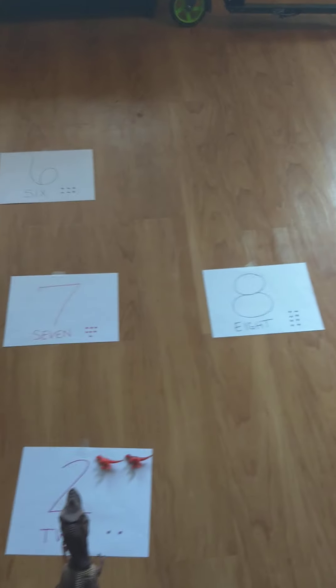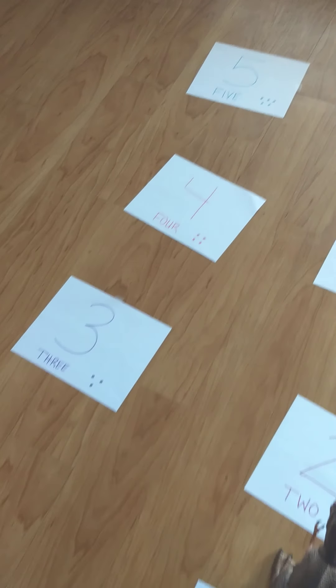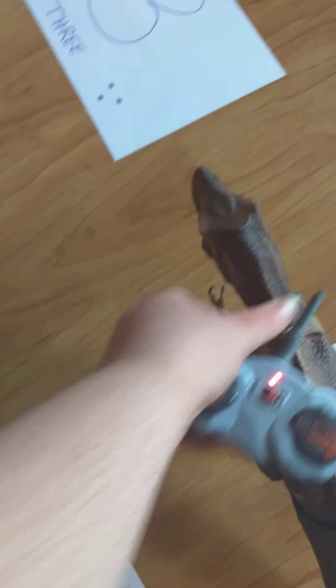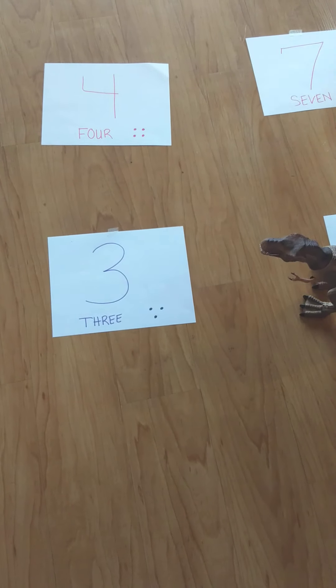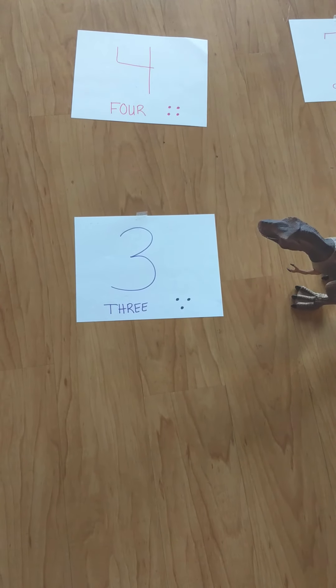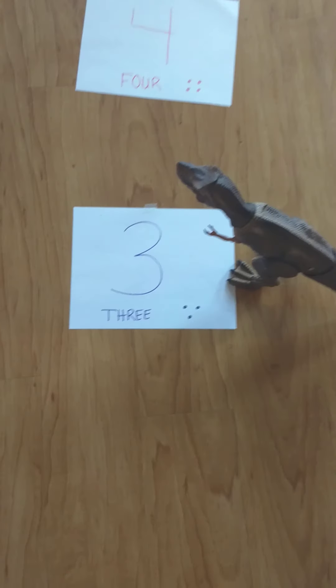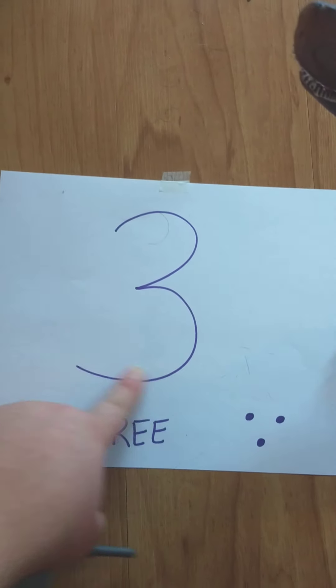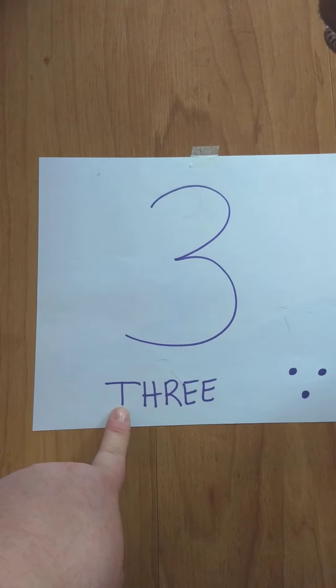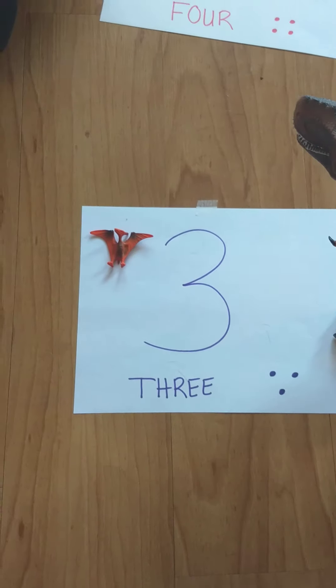Alright, now on to number 3. Who sees the number 3? Oh, I think I see it. Let's turn my dinosaur over. Alright, here he goes. Alright, he made it to number 3. Alright, you see the number 3? The letters for 3. And the numbers. We're going to put down 3 dinosaurs. 2, 3. 2, 3.